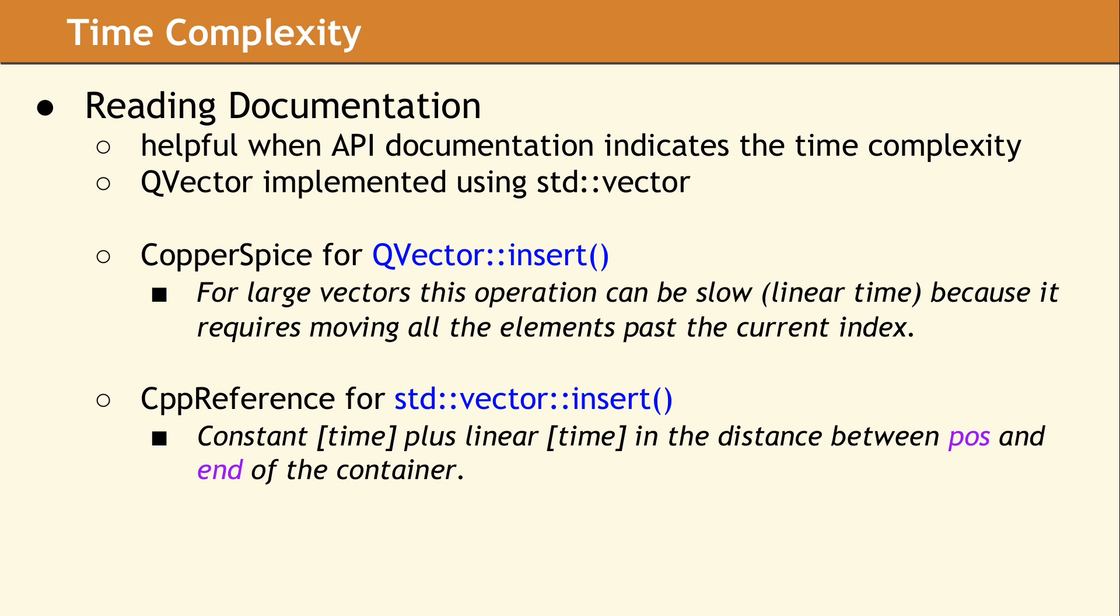In the Copper Spice Library documentation for Q Vector Insert, we indicate the operation requires moving all the elements past the current index. We also document the time complexity is linear, since moving 100 elements will take 10 times as long as moving just 10 elements.